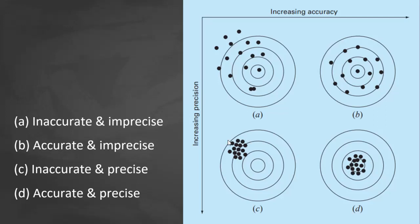For C, this one is inaccurate because the shots are centered in the upper left quadrant, but it's precise because the shots are close to each other. Now D is both accurate and precise. So money ito ang gusto ma-achieve.